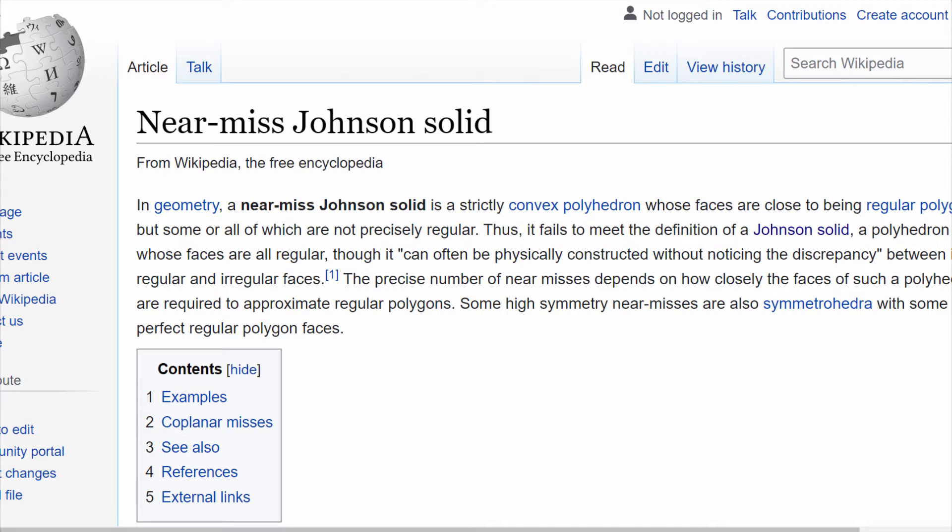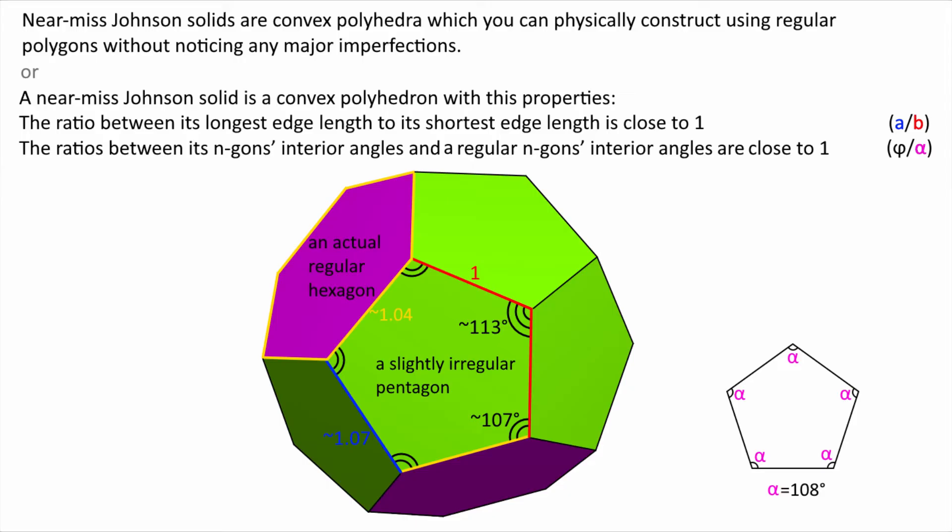Here are some other definitions. Near-miss Johnson solids are convex polyhedra which you can physically construct using regular polygons without noticing any problems.